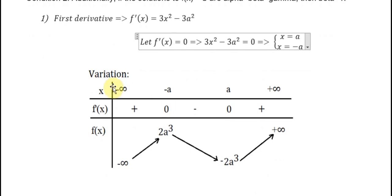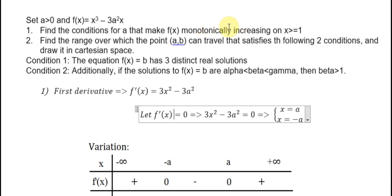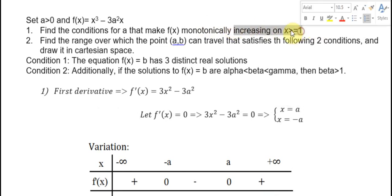Then we will draw the variation table. We put minus a and a as the critical points. These correspond to the maximum and minimum points — here is the maximum point and here is the minimum point. The question asks us to find the condition in the region s greater than or equal to 1.